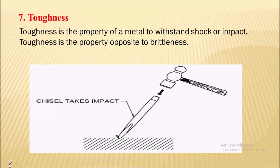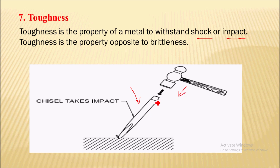Next is toughness. Toughness is the ability of a material to withstand shock or impact. Here you can see a chisel onto which a hammering or impact load is applied. This chisel will resist that load — that property is nothing but toughness. Toughness is a property which is opposite to brittleness.